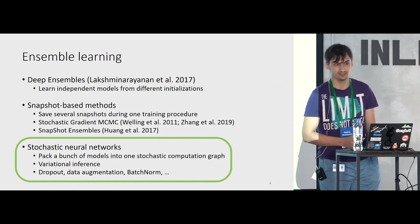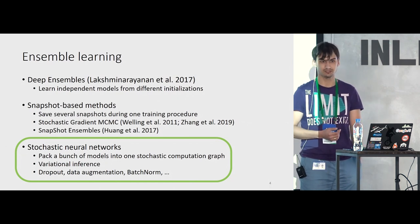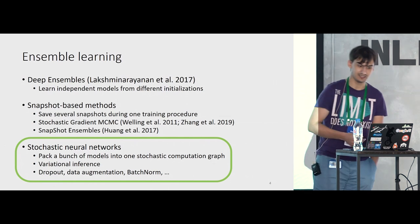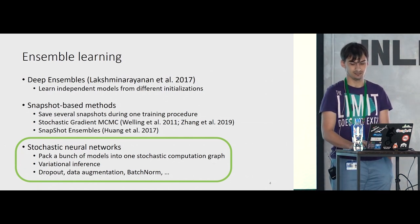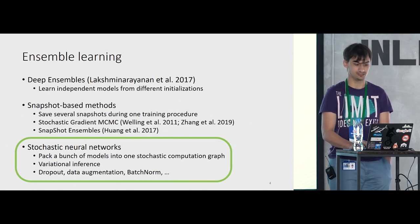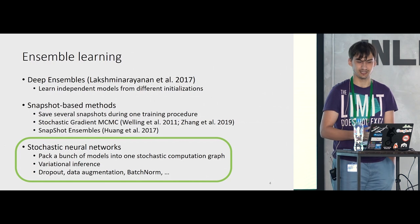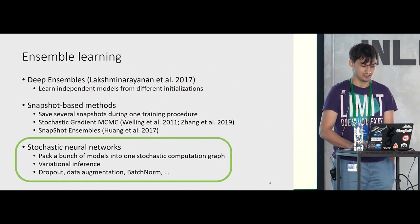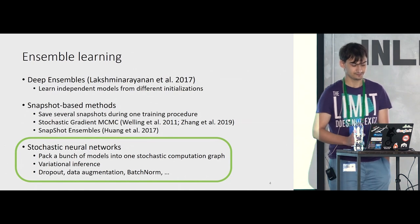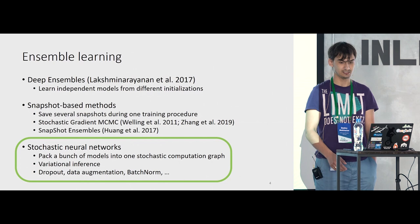This is called deep ensembles, the most straightforward way to obtain an ensemble of neural networks. This technique is very simple, but it provides the best possible quality of prediction — it is very hard to beat this baseline. However, it is very difficult with respect to computational resources. In order to obtain 10 neural networks, you need to train 10 neural networks separately — 10 times more time.